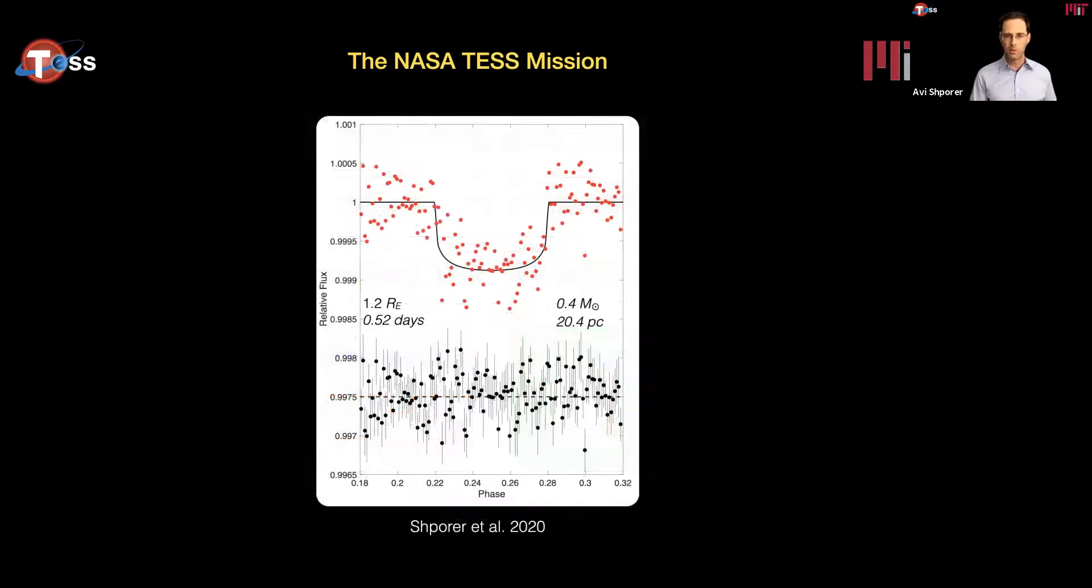Here is another example of a small planet orbiting a small star. The orbital period here is only 12 and a half hours. And again, orbiting small stars, that is not especially uncommon. Now, these are all very interesting and fun examples,